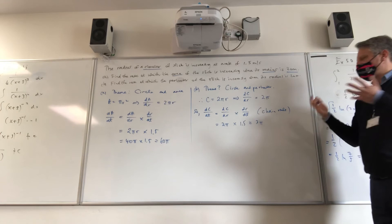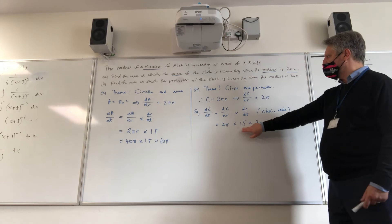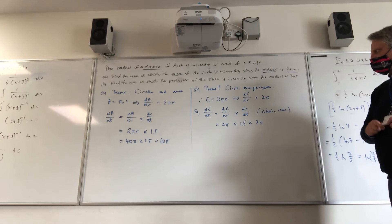We want to now create a chain using the information that we have. So we're using effectively the chain rule. Do we know what dC/dr is? dC/dr is 2π. Do we know what the change of r in terms of time is? Well, yes. We're told it's 1.5, the same as in this part of the question here. So quite simply, we're getting an answer of 3π.